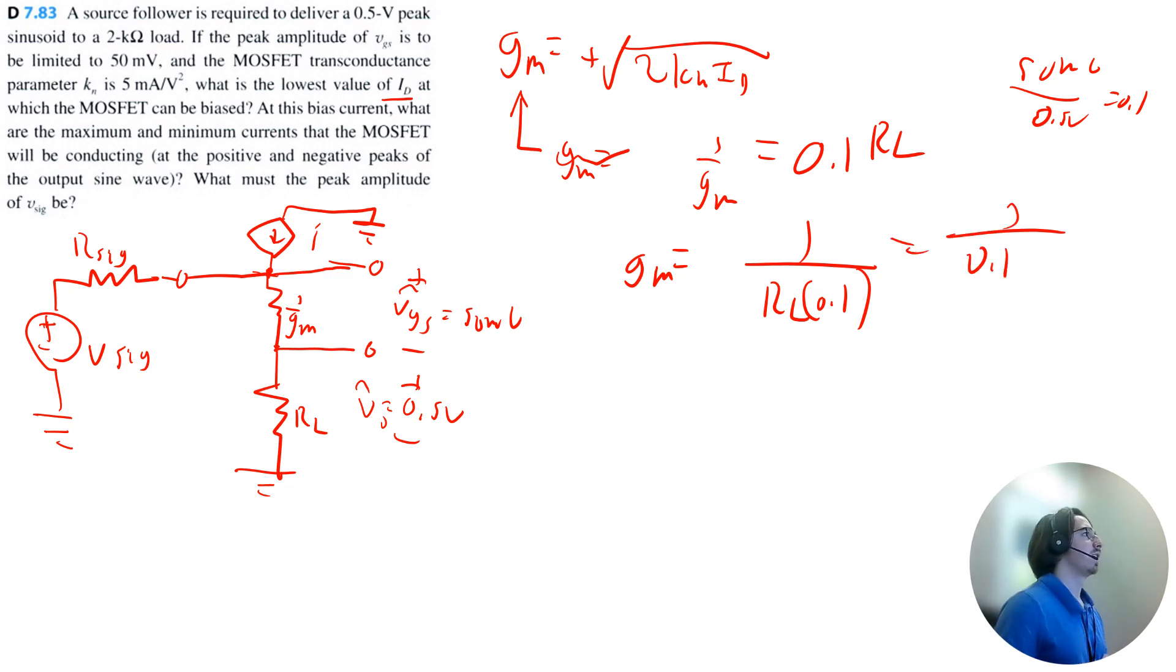So that's equal to 1 divided by 0.1 times the load resistance. Were we given that? Yeah, 2 kilo ohms. So I get that gm is equal to 5 milliamp per volt, which means if we can isolate the drain current to be gm squared divided by 2kn.